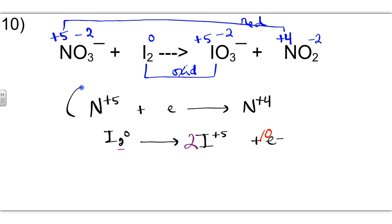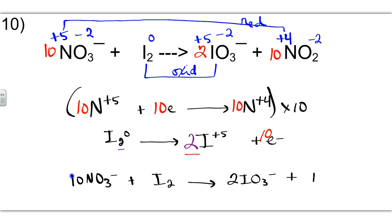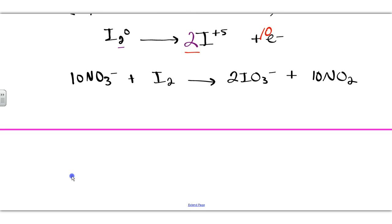5 times 2 equals 10 electrons transferred. So I'll have to multiply the top reaction times 10 in order to balance the electrons. That gives me 10. And now that my electrons are balanced, I can write my new coefficients in the equation. We'll put a 10 in front of I₂, a 2 for the iodine with plus 5, and then place our 10 here. Now verifying masses: 10 nitrogens on each side, 2 iodines on each side.